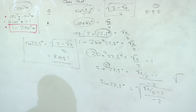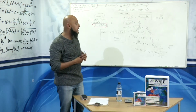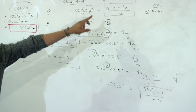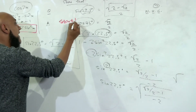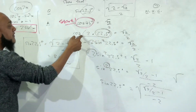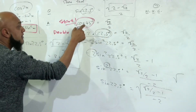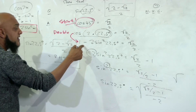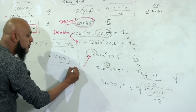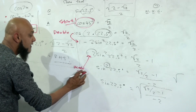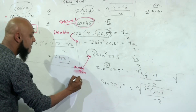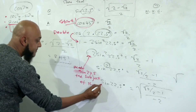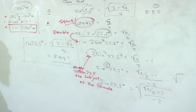You will now get seven marks for that problem. Just to go through a quick recap: you needed to prove that sin(22.5°) equals that expression. Your starting point — start with cos(45°) = √2/2. That's your double angle: cos(2 × 22.5°) = √2/2. Now change your cosine to sine using the formula 1 − 2sin²(22.5°). Then make sin(22.5°) the subject of the formula, and the problem works itself out.